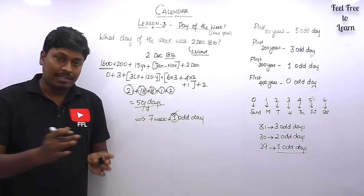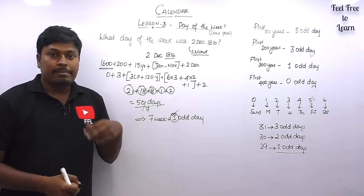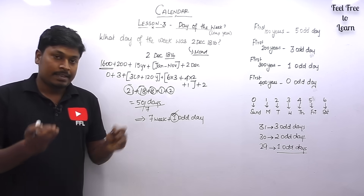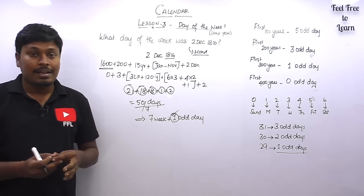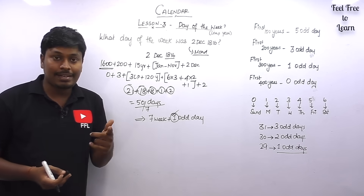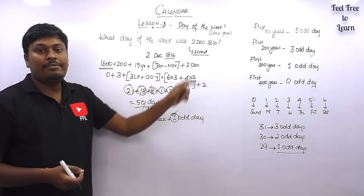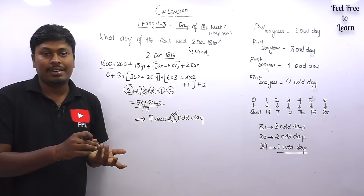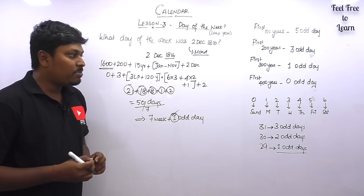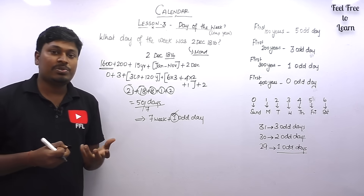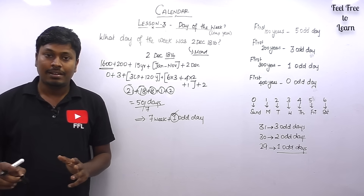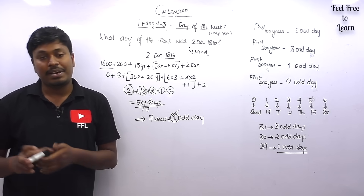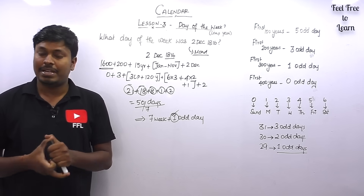In this lesson number 3 we have solved 5 questions based on a leap year. In lesson 2 we solved 5 similar questions based on an ordinary year. The major difference is that in a leap year, February has 29 days giving 1 additional odd day, whereas in an ordinary year February has 28 days giving 0 odd days. Practice at least 25 to 30 questions to get a clear idea of how to calculate the day of the week. Thank you for watching — if you liked it, share it with your friends. Bye!